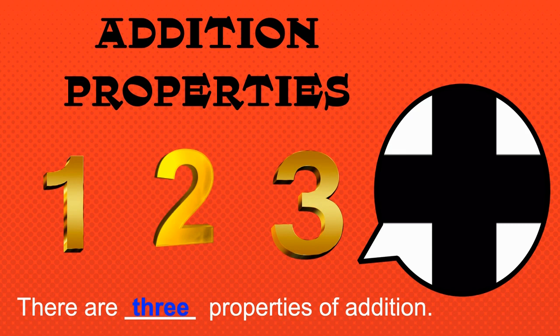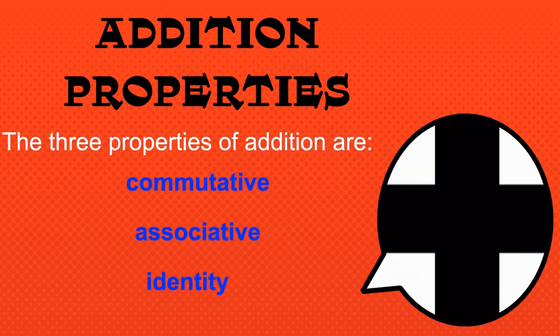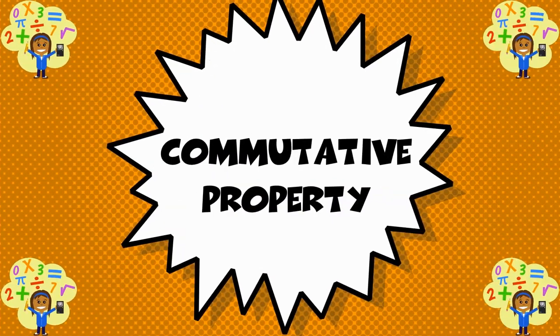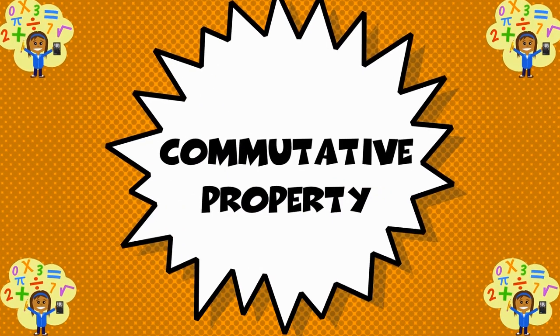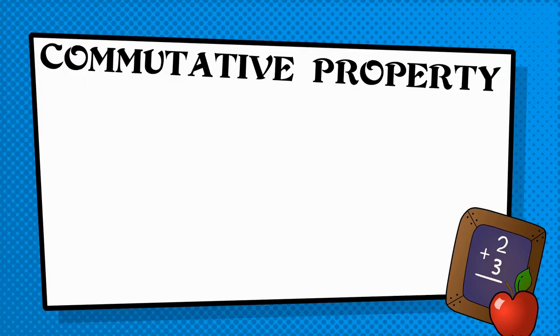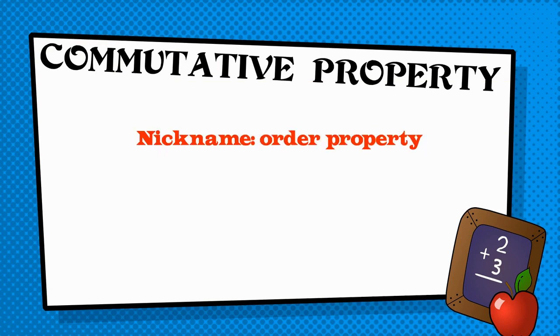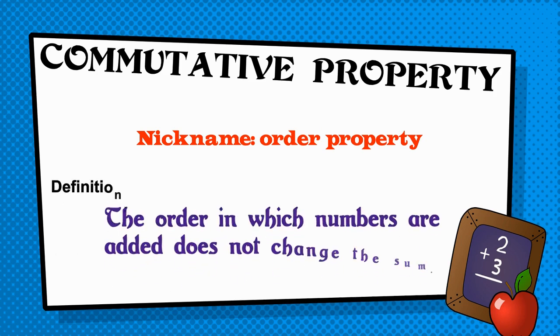What are these three properties that we'll be focusing on? Well, the three properties of addition are the commutative, associative, and identity property. Let's look at the commutative property. The commutative property, also known as the order property. This property tells us that the order in which numbers are added does not change the sum.